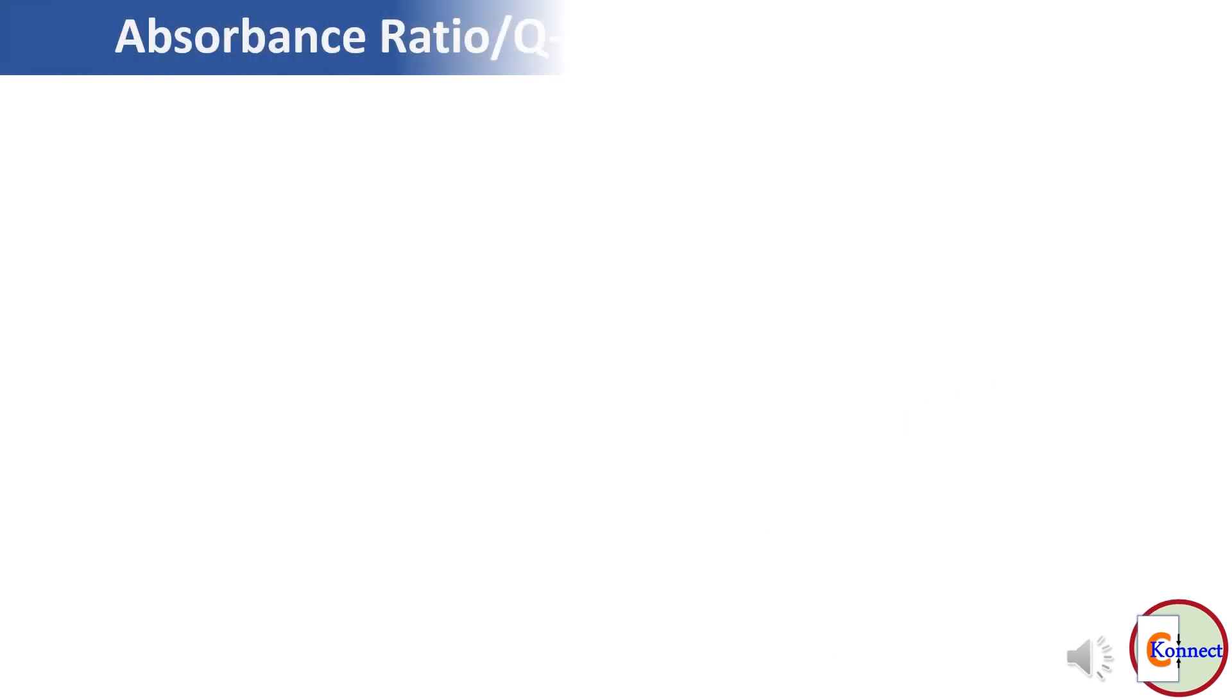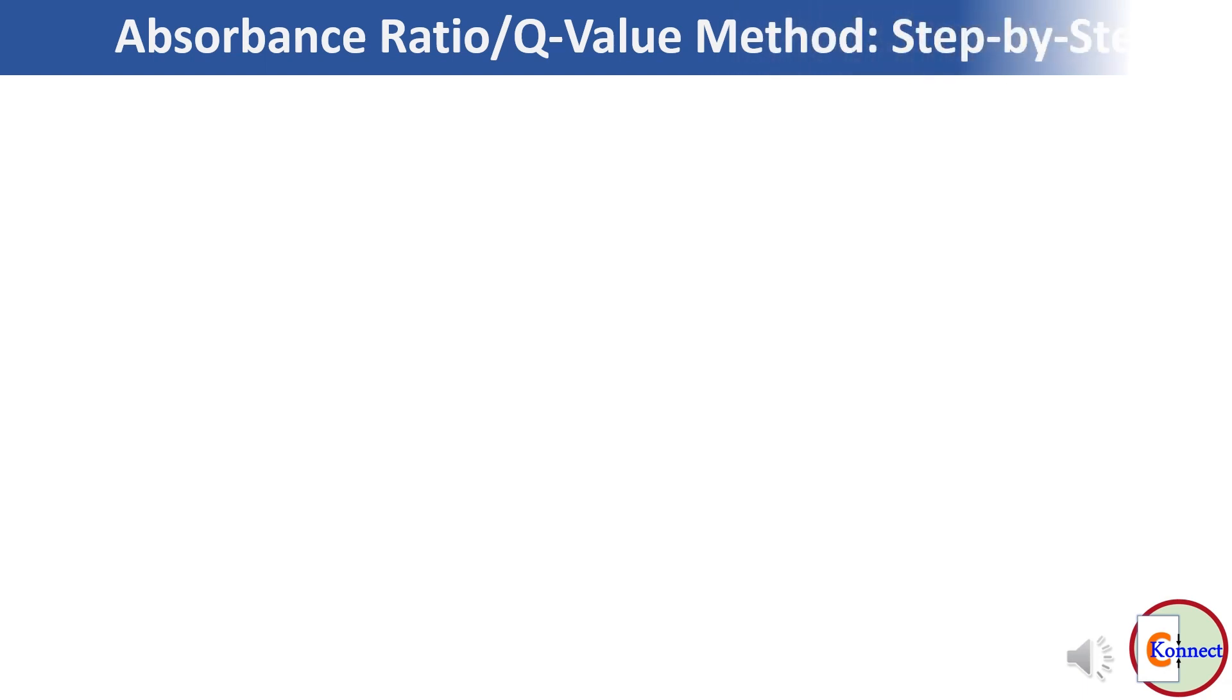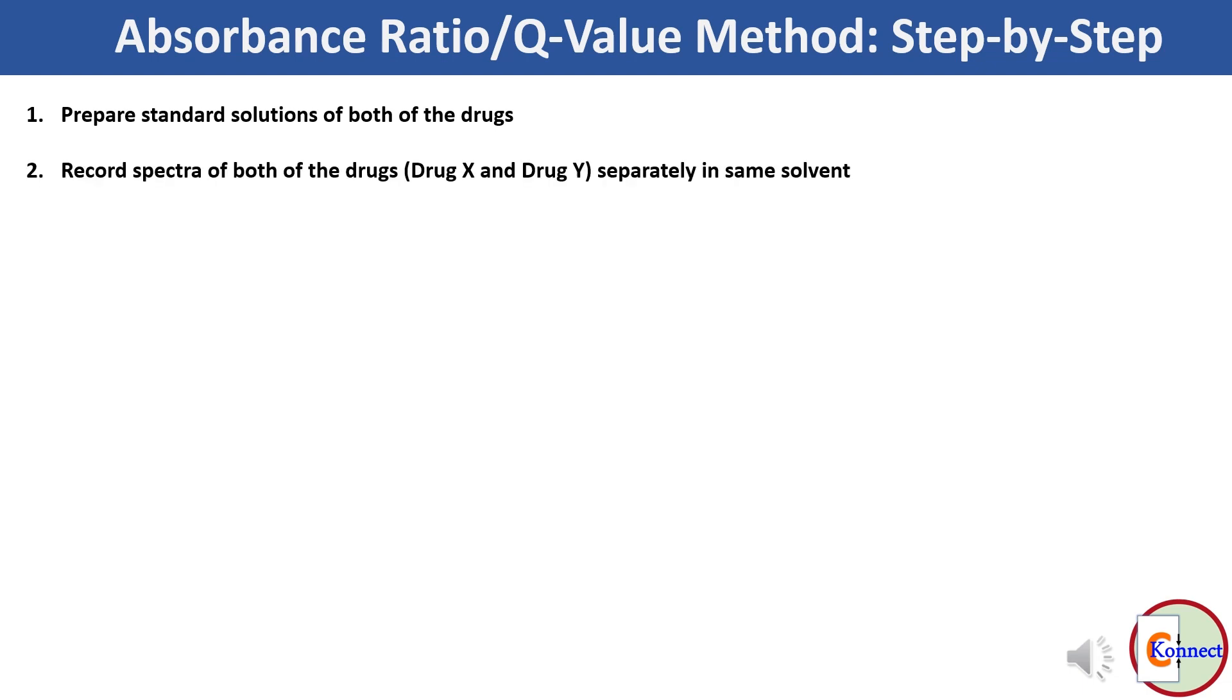Now we will see step-by-step procedure for using absorbance ratio or Q value method for simultaneous estimation of drugs by UV visible spectroscopy. First step is to prepare standard solutions of both of the drugs.